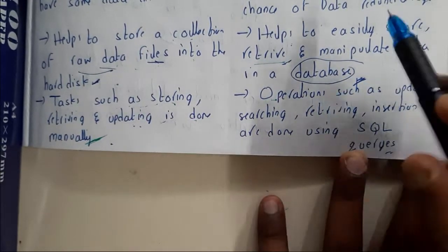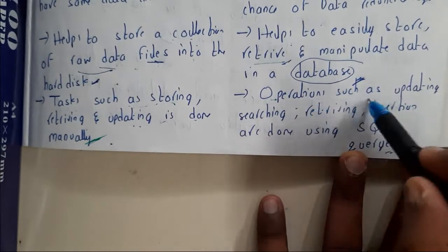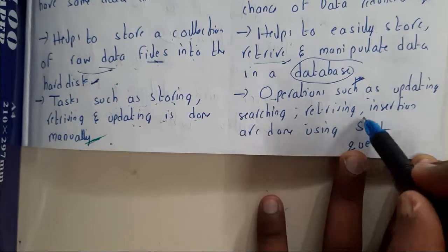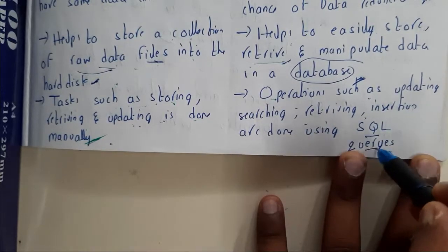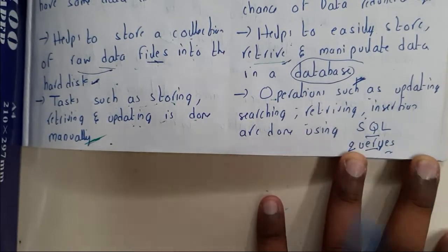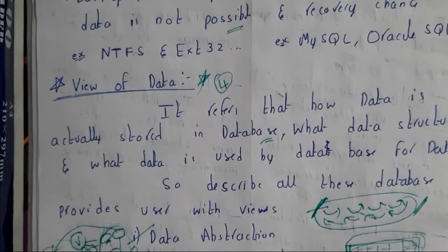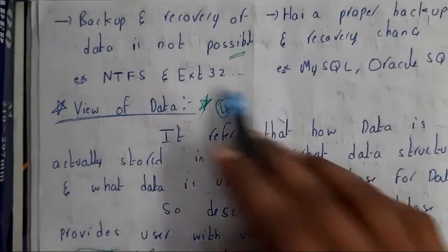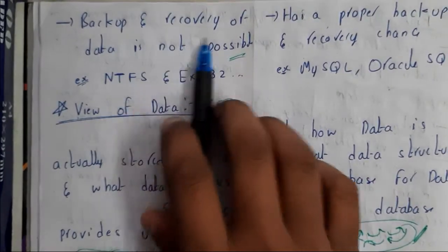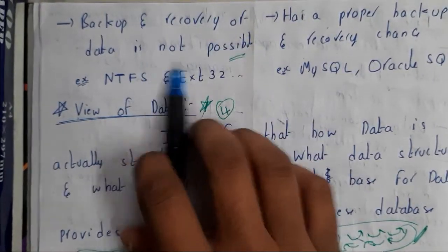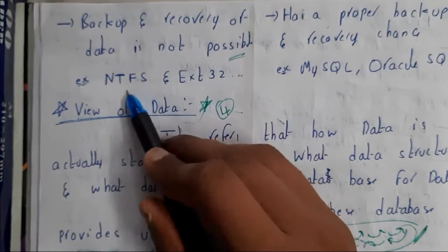In file system, tasks such as storing, retrieving, and updating are done manually. Whereas in a database system, we do these operations using SQL queries.